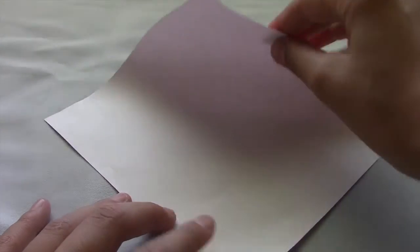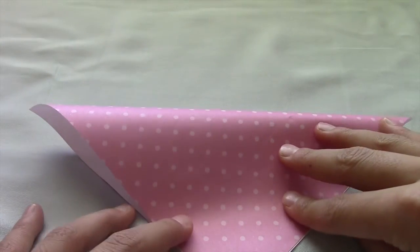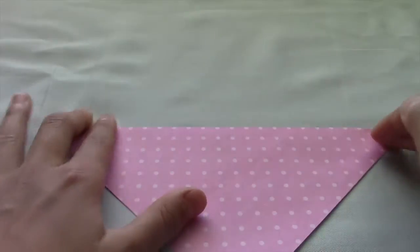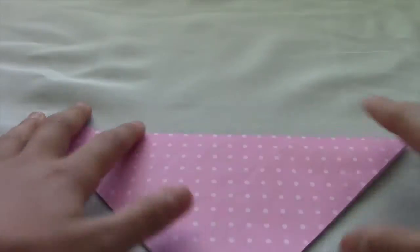So our first step is to turn it upside down in a diamond shape. Then you're going to take the very top and fold it over to the bottom just like that, and you're going to crease it and unfold.